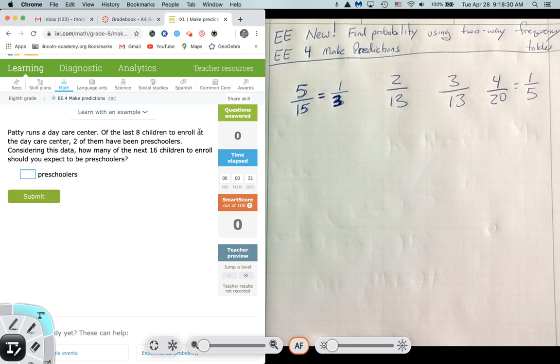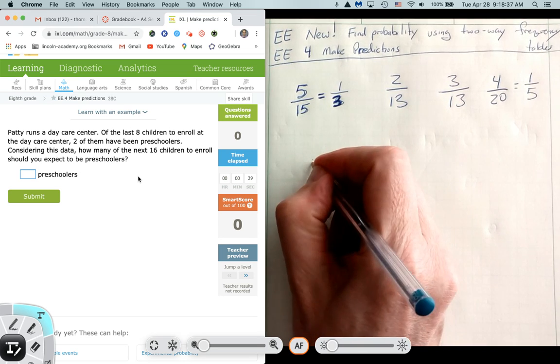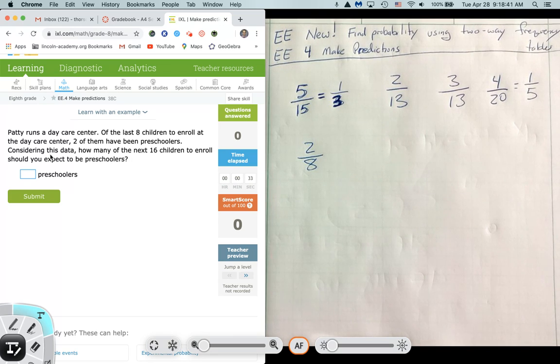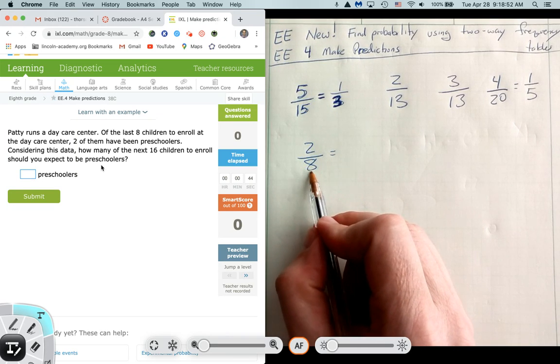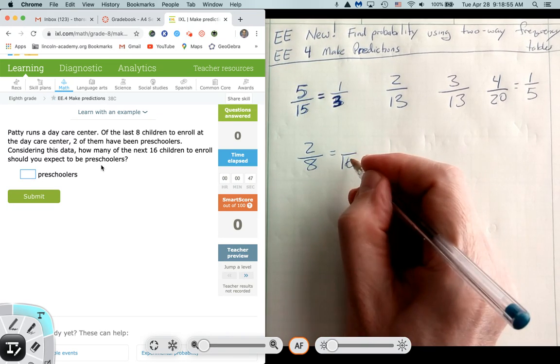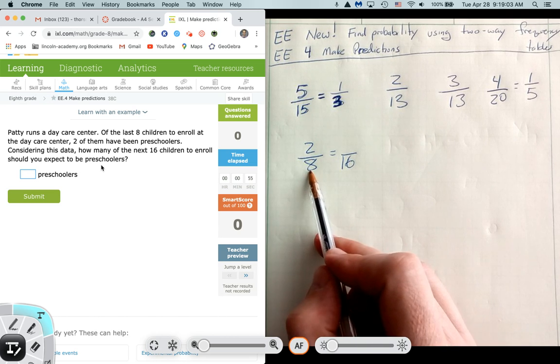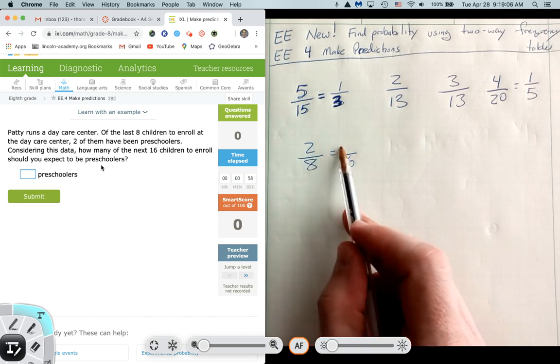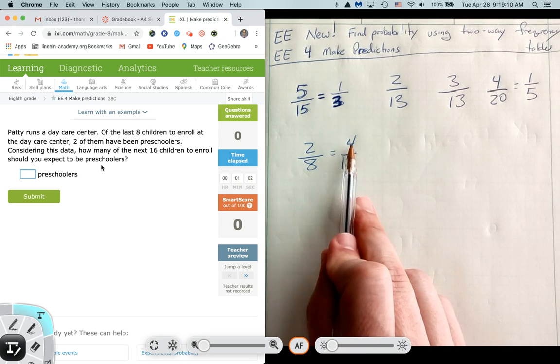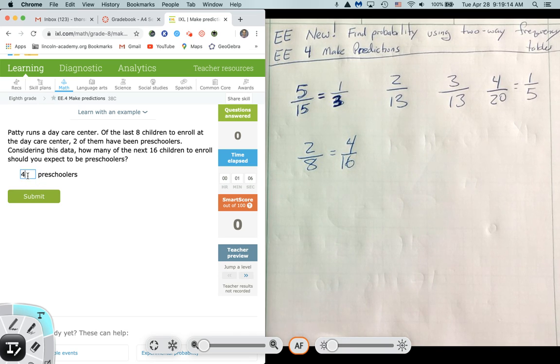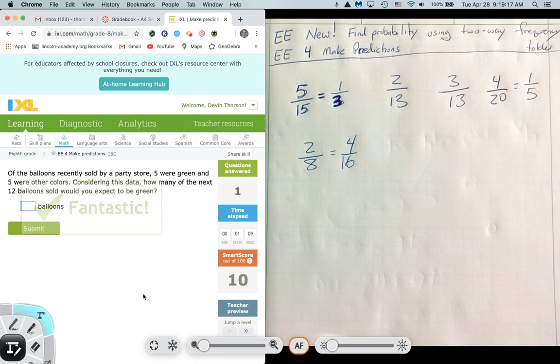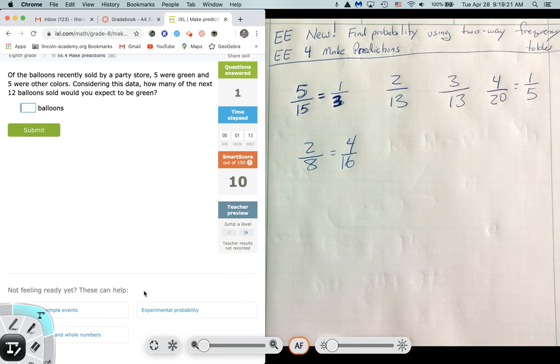Patty runs a daycare center. Of the last eight to enroll at the daycare center, two of them have been preschoolers. So what I'm going to do is I'm going to say, all right, there was a total of eight. Two were preschoolers. Okay, considering this data, how many of the next 16 children to enroll should be expected to be preschoolers? So what they've done is they're saying, all right, let's say that we change that total to 16. What must we do to keep the ratio, this percentage, this fraction, this probability to the same? Well, if I double the bottom of the fraction, I need to double the top. So how many out of 16 will be preschoolers? Four will be preschoolers. But that's just a prediction. And that's what we need to realize is it's not necessarily guaranteed. We're just predicting. We're making an assumption on previous information.